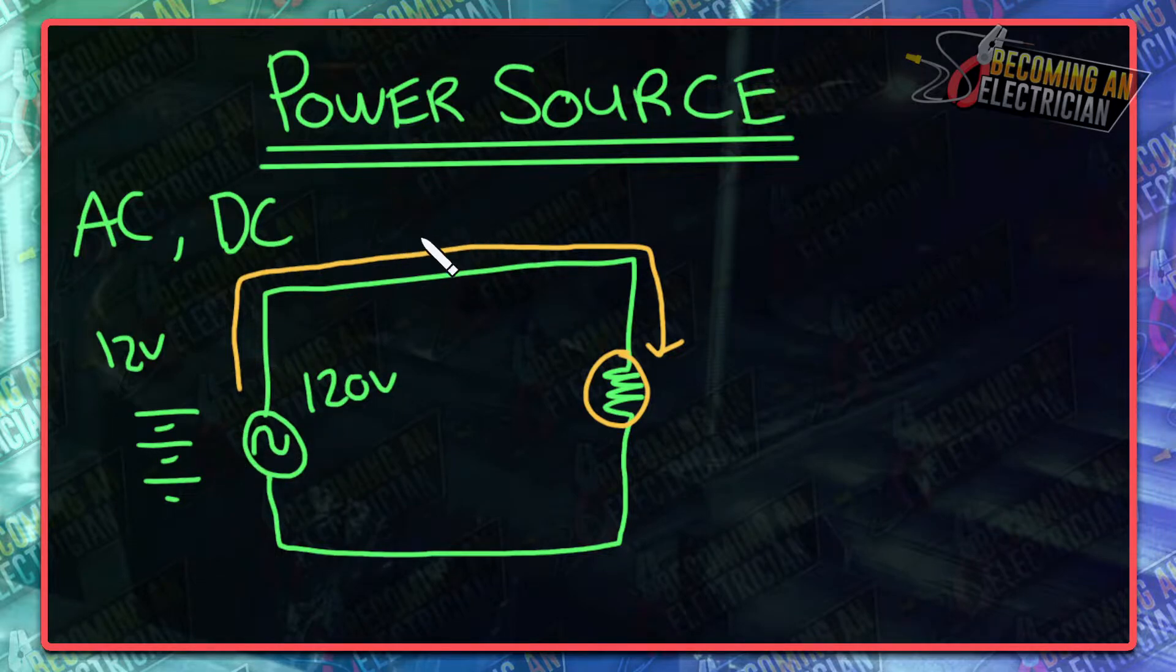Now as an electrician, this right here would be like our electrical panel. Now this could be a generator like if you're writing your test, but generally in the real world if we're looking at a circuit, it comes from the panel which comes from the transformer which is generated however it's generated.